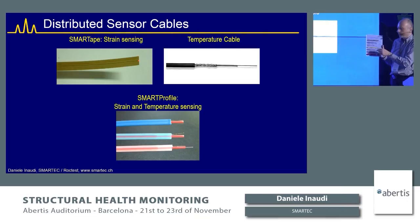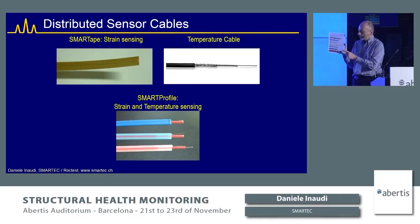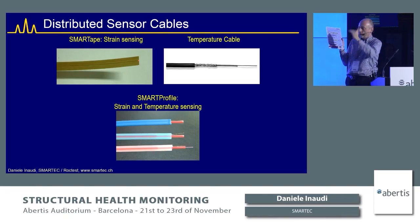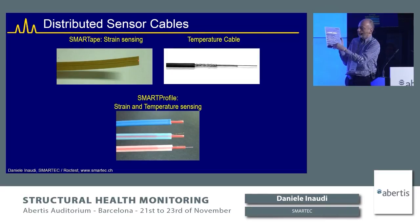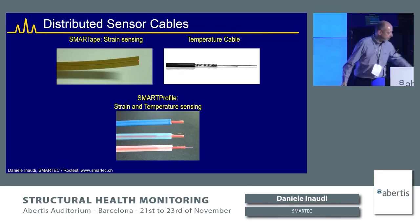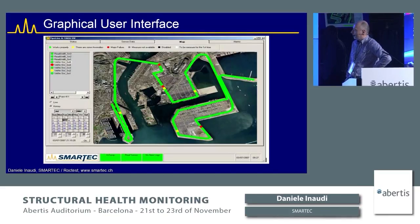Temperature monitoring cables allow the fiber to move freely inside the cable. A special version also contains electrical cables used to heat the cable, useful for detecting leaks from dams: the cable is heated and the rate of temperature recovery is monitored — water movement around the cable causes faster cooling, while dry conditions maintain elevated temperature longer.